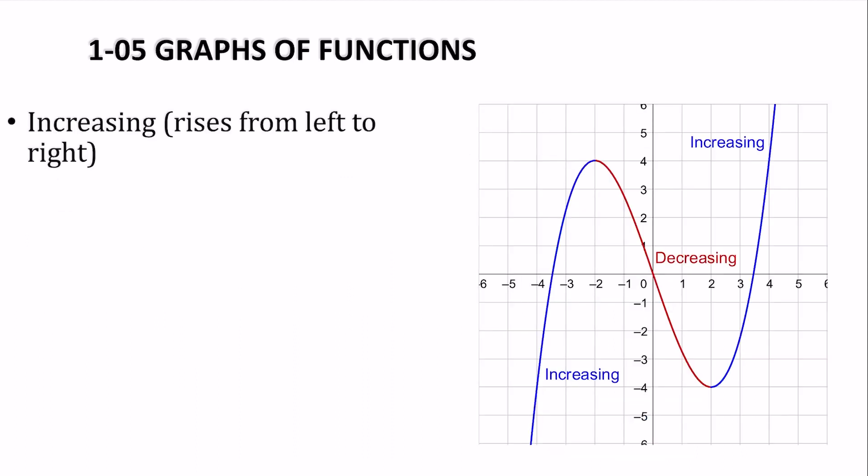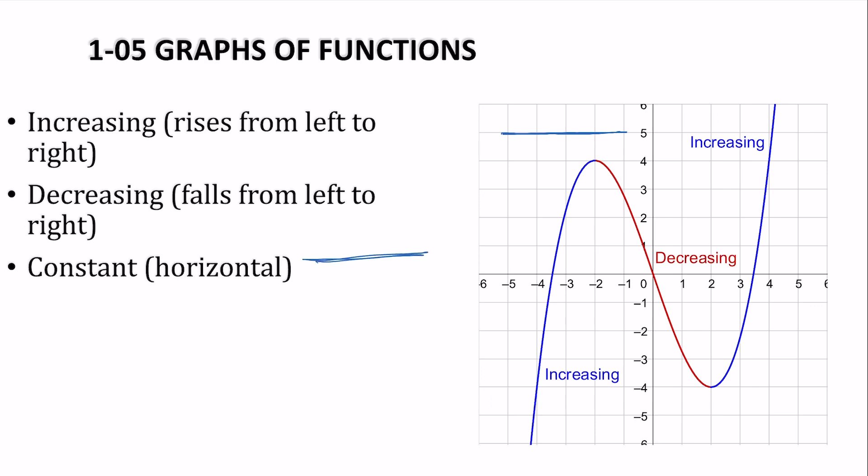Other parts of graphs. Increasing is where it rises from the left to right. So on the graph here, it's the blue part where it's going up from left to right. Decreasing would be where it falls from left to right. That would be the red part where it's going down. Constant would be horizontal, so if your graph was like that, then it would be constant.